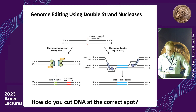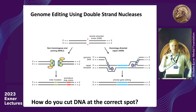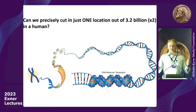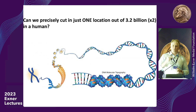One straightforward way is by creating a double-stranded break in the DNA at a precise location. What we really need is a pair of scissors that specifically cuts the DNA where we want it. Cutting DNA could be dangerous — we have 3.2 billion base pairs times two — so we want scissors that only cut where we want and not where we don't. One of the more exciting ways to do this is through the CRISPR-Cas9 system.